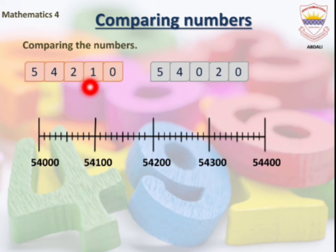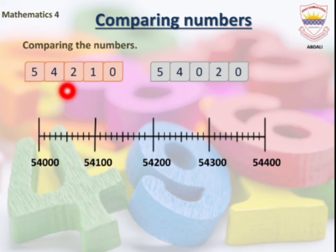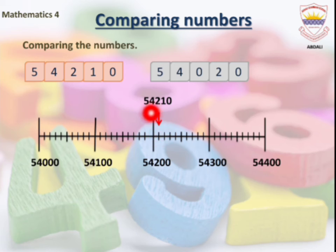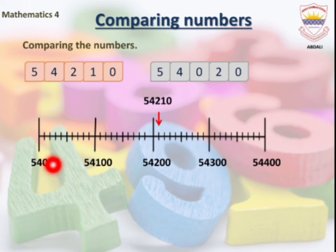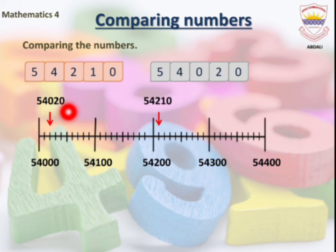Our first number is 54,210. We put it between 54,200 and 54,300, placing 54,210 after 54,200 — the difference between them is 10. Our second number is 54,020. We put 54,020 after 54,000 — adding 20 to 54,000 gives us 54,020 — and we mark it two points after 54,000.